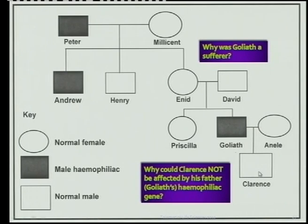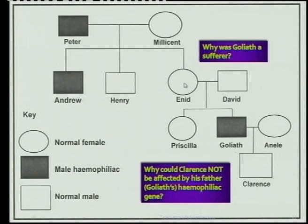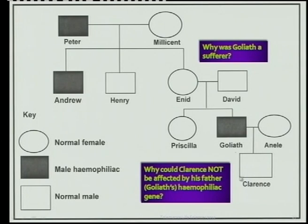There's another interesting question on the sex-linked diseases. The question is, why was Goliath a sufferer? If you look at his parents, Enid and David, why is he the sufferer? Your answer must go back to the parents — he must have got this from his mother Enid. Enid must have been a carrier of hemophilia for him to be a sufferer, because he got the X chromosome from his mother. And if you look at Enid's father Peter, he was a sufferer, so obviously he gave her the X chromosome with the disease gene. Why is it that this hemophiliac father can never have a sufferer boy? Because the boy gets his X chromosome from his mother and never from the father. The father only gives his healthy Y chromosome to the boy.